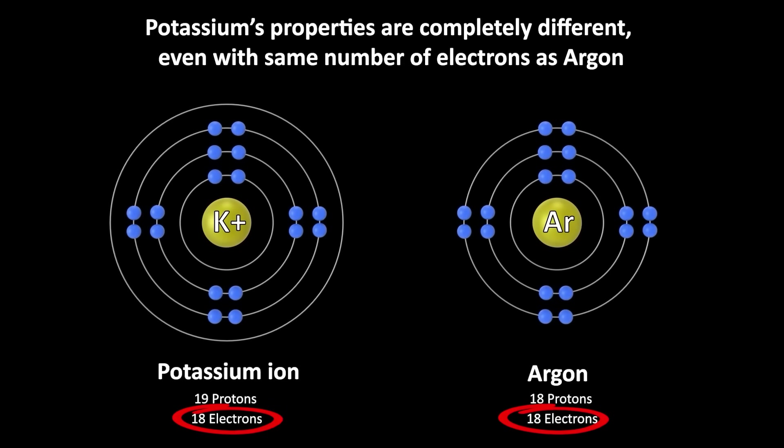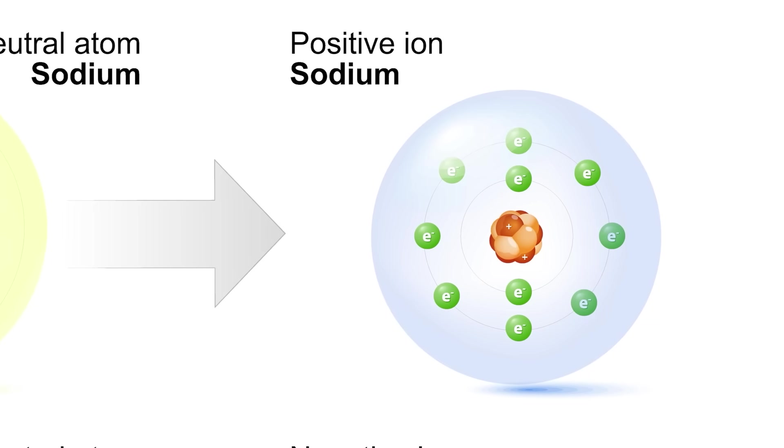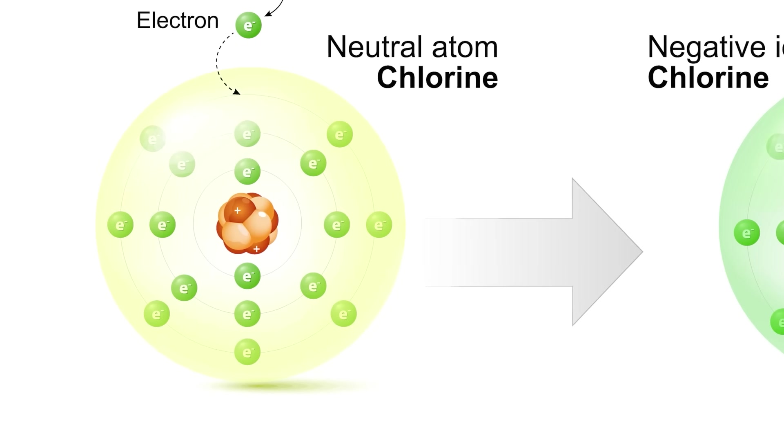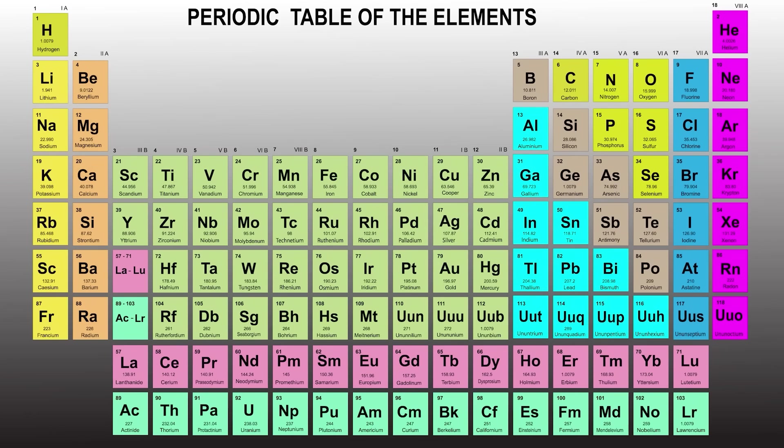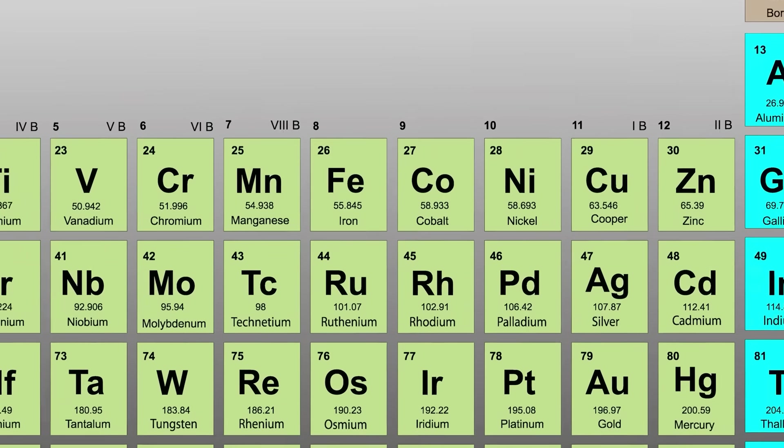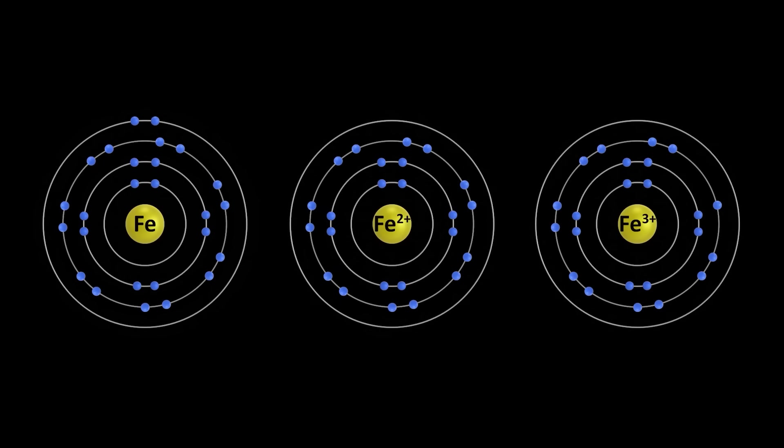This is also the case for almost every other element. That is, they can exist in nature with different numbers of electrons, but retain their essential atomic properties. For example, iron, although it requires 26 electrons to be neutral, it commonly exists in nature with 24 or 23 electrons, designated as the ions Fe+2 and Fe+3. But it still retains its essential atomic or nuclear properties, even though it exists in ionic form.